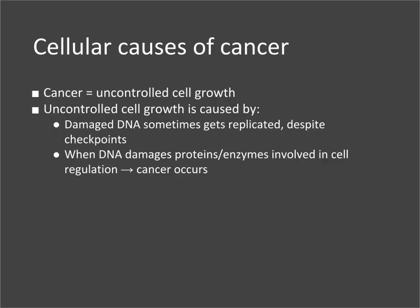If the controlling factors of the cell cycle break down and stop controlling the cell cycle, we end up with rogue cells going through mitosis when they should not be. This uncontrolled cell growth or cell division is known as cancer — any time cells start dividing when they're not supposed to. This can be caused by checkpoints not catching damage to DNA.